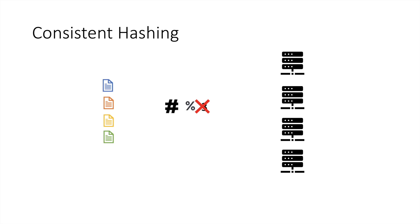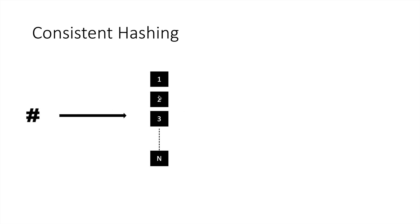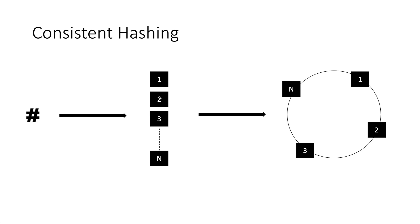The basic idea is that our distribution logic using hashing is dependent on the number of nodes. The idea is to remove that dependency — the distribution logic should be independent of how many nodes are in the system. To do this, you use a hash function that has a range of values it can generate, say from 1 to N. All of these range values are represented over a circle, where every point on the circle represents a value the hash function can generate as output.